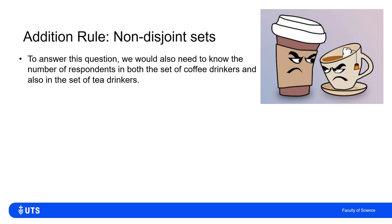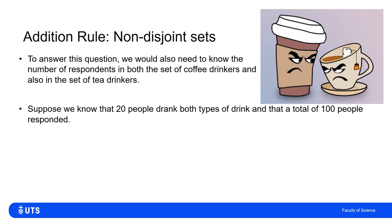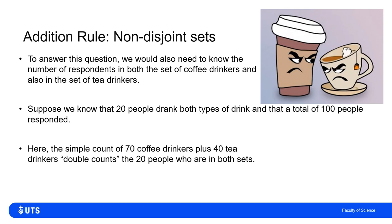If we know more information — say 20 people had both types of drink and 100 people responded — we can figure out how these sets overlap. The 70 coffee drinkers and 40 tea drinkers include 20 people who were double counted, appearing in both lists. So the 70 coffee drinkers consist of 50 uniquely coffee drinkers and 20 coffee-and-tea drinkers, while the 40 tea drinkers consist of 20 uniquely tea drinkers and 20 tea-and-coffee drinkers. This calls for a Venn diagram.